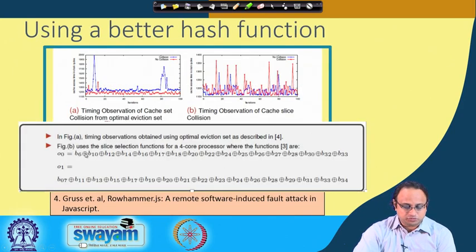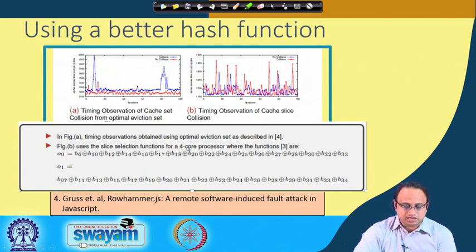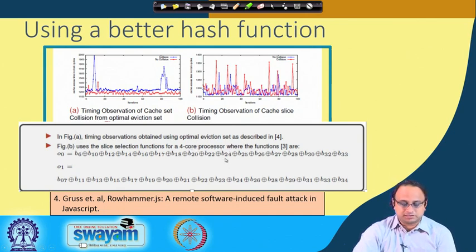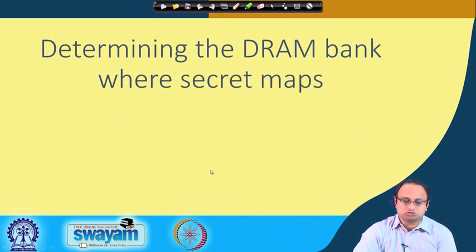Here is another alternative hash function presented in a following work, which apparently provides better separation. You can use either as a possible representation of the corresponding mapping. Now, for the actual attack you also need to determine the DRAM bank where the secret maps. The objective of the cache set eviction detection was to ensure that during decryption, the access is done from DRAM rather than the cache.